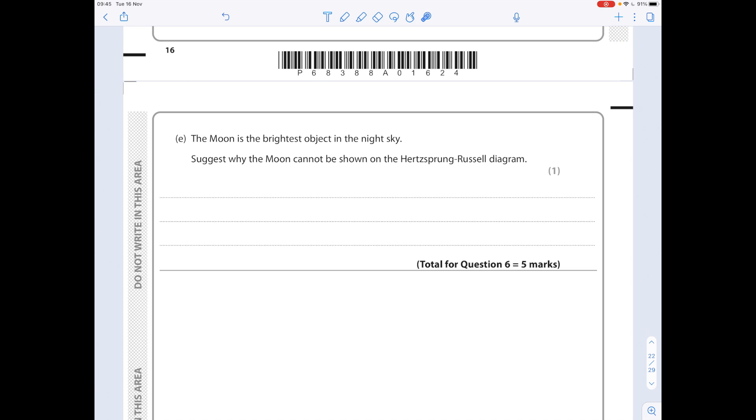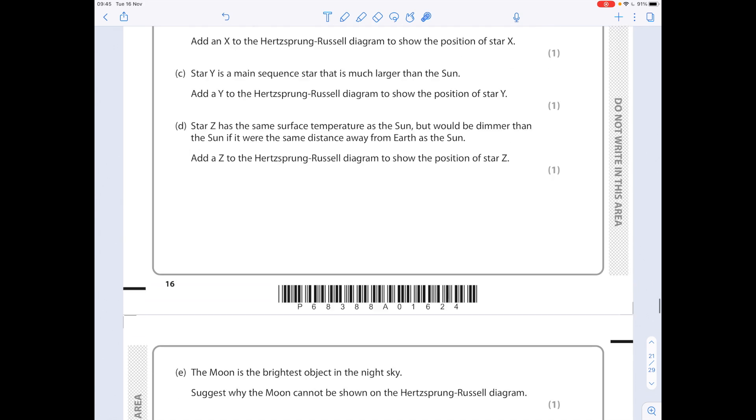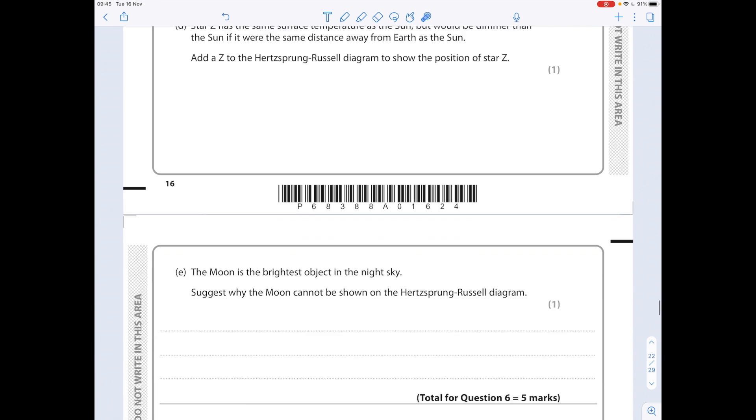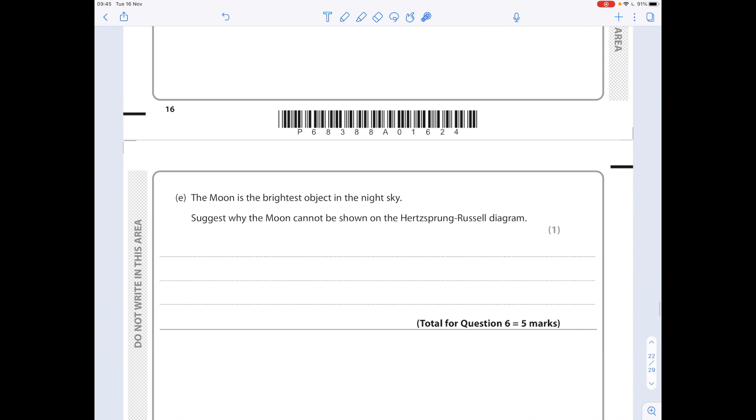The Moon is the brightest object in the night sky. Suggests why the Moon cannot be shown on a Hertzsprung-Russell diagram. Well, the Hertzsprung-Russell diagram is all to do with stars. The Moon is obviously not a star, it's a satellite. And that the Moon's temperature would not register properly on the x-axis. It would be far too cool because it doesn't give out heat energy. The Moon is not a star and the Moon is too cool to register on the Hertzsprung-Russell diagram.